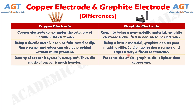Number 3: density of copper is typically 8.96 grams per cubic centimeter, thus a die made of copper is much heavier. Whereas, density of graphite is typically 2.26 grams per cubic centimeter, so for the same size of die, a graphite die is lighter than a copper one.